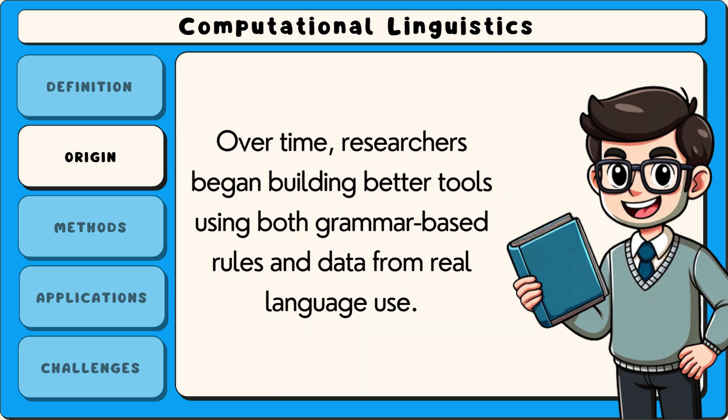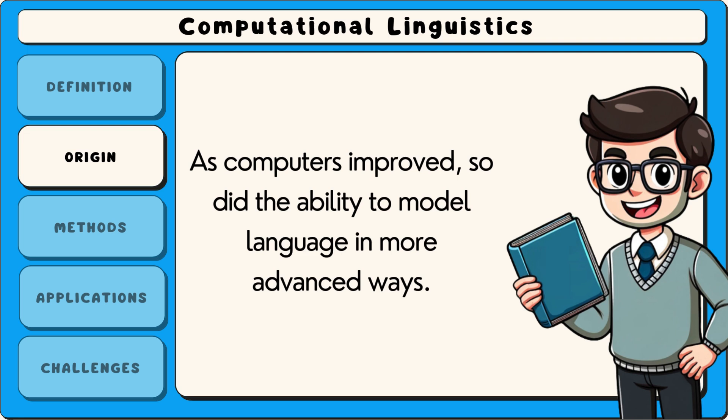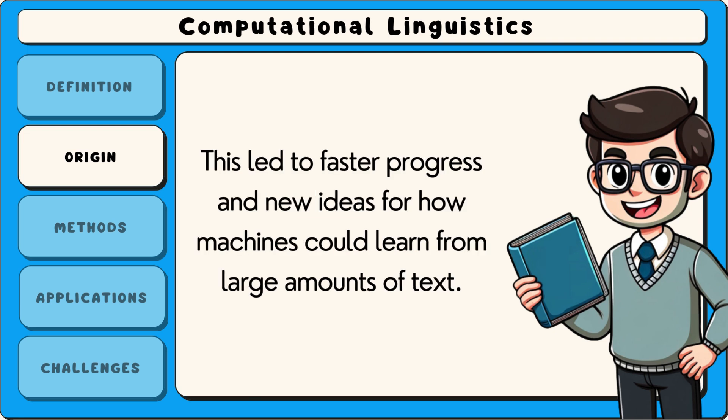Over time, researchers began building better tools using both grammar-based rules and data from real language use. As computers improved, so did the ability to model language in more advanced ways. This led to faster progress and new ideas for how machines could learn from large amounts of text.